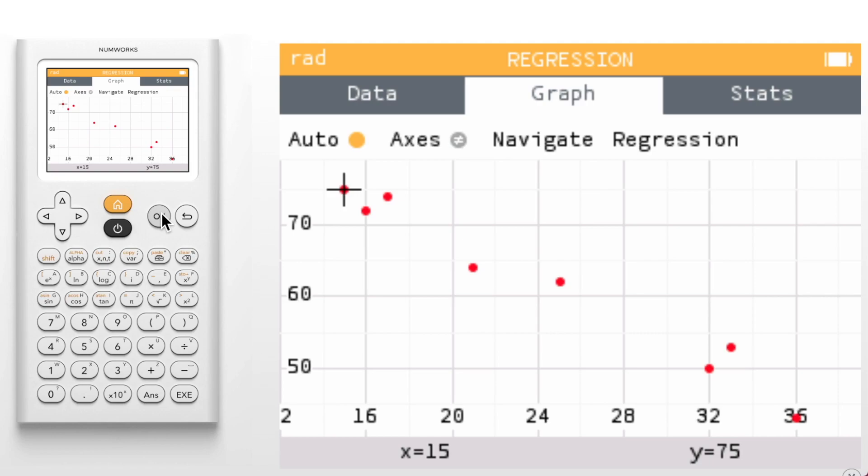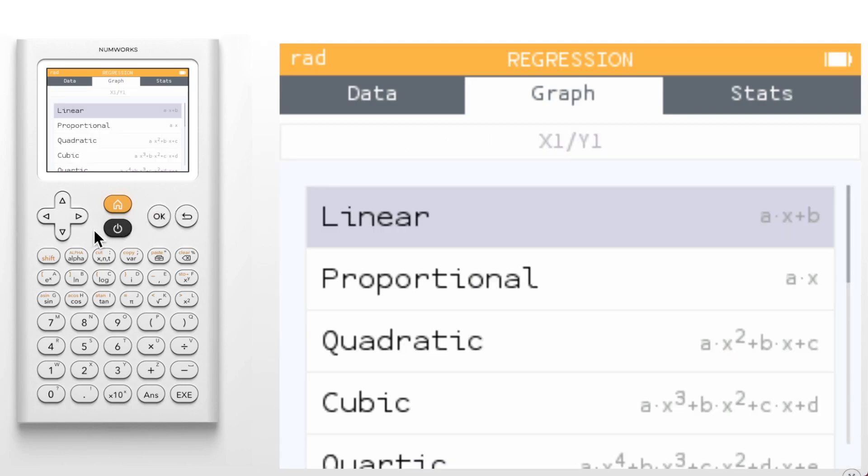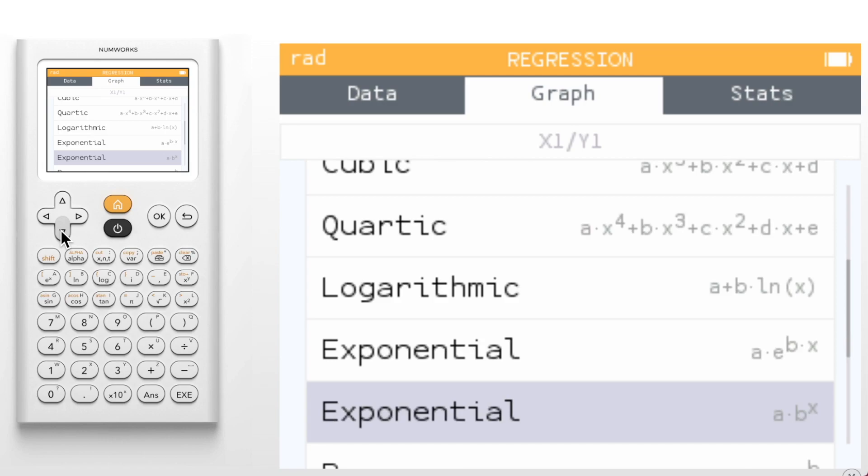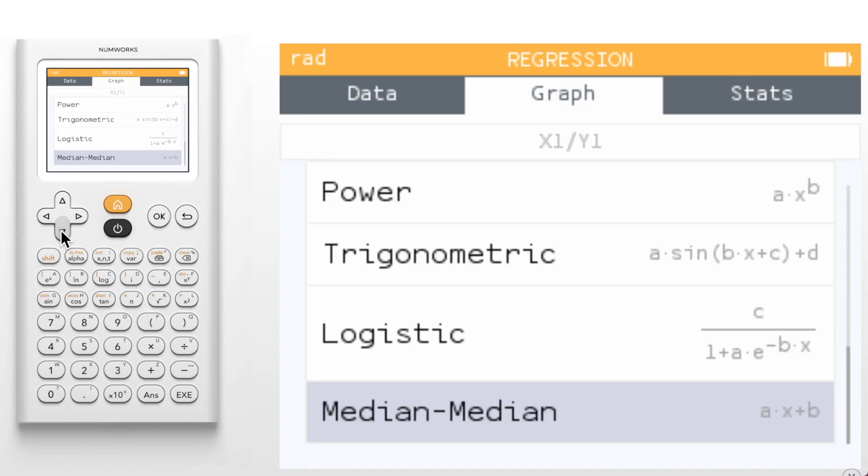This provides the opportunity to view the data before applying a regression model. Depending on the observed trend, you can then add a regression model by simply pressing OK or by selecting the regression item under the tab bar. We've added two new regression models, the exponential model of the form Y equals A times B to the X, as well as the median median model.